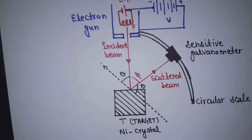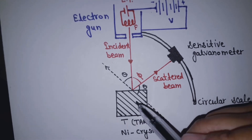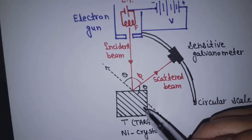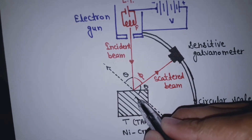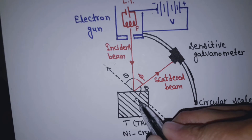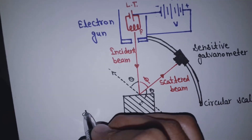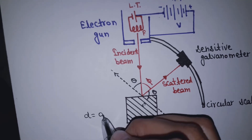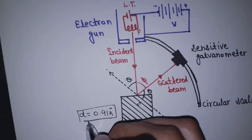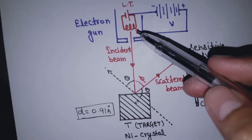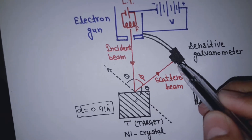Why did we use nickel? Because nickel's crystal arrangement is very good and the interplanar spacing is already known. In this case, the interplanar spacing is 0.91 angstrom. This is known and we will use it, so that the electron beam reflects in some direction.